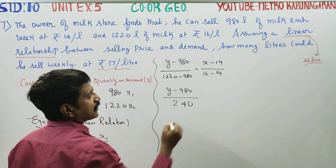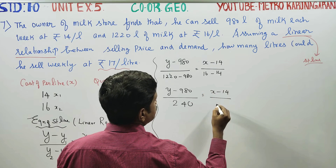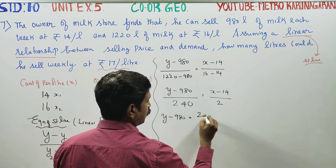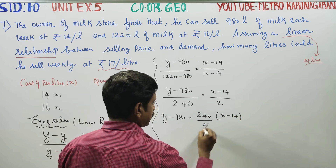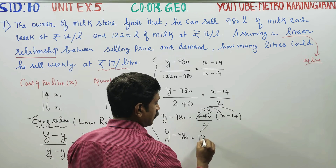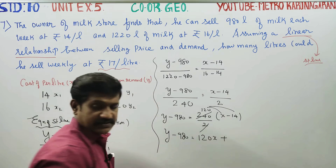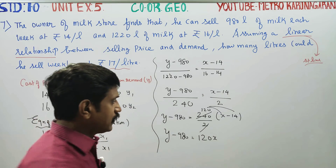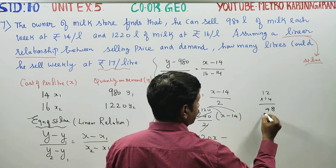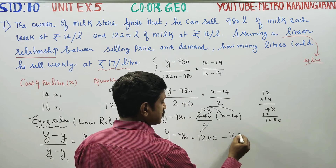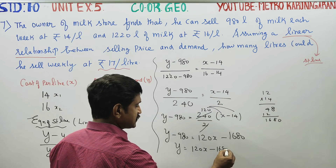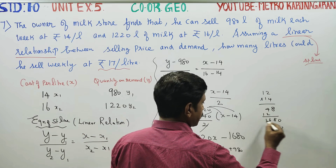This simplifies to (y - 980) / 240 = (x - 14) / 2. Cross-multiplying: 2(y - 980) = 240(x - 14), giving 2y - 1960 = 240x - 3360, so y - 980 = 120(x - 14), which gives y - 980 = 120x - 1680. Adding 980 to both sides: y = 120x - 1680 + 980.